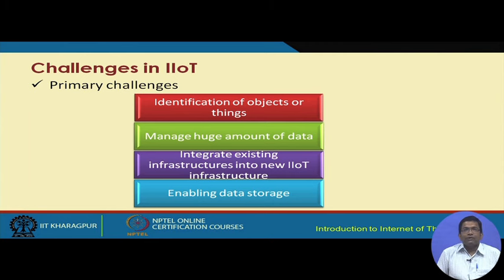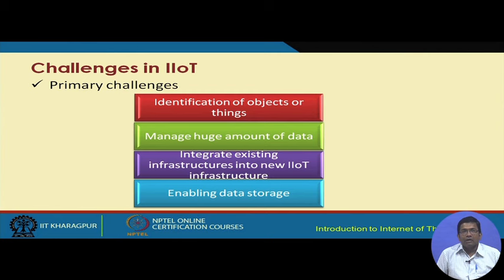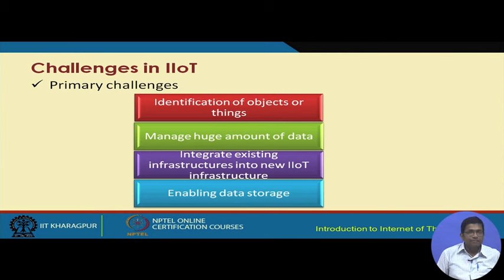Some of the challenges of building IIoT include: identification of objects or things, which we have already looked at in the context of regular IoT. Managing a huge amount of data is another challenge. Integrating existing infrastructure into new IIoT infrastructure and enabling data storage are also significant challenges in deploying IIoT solutions.